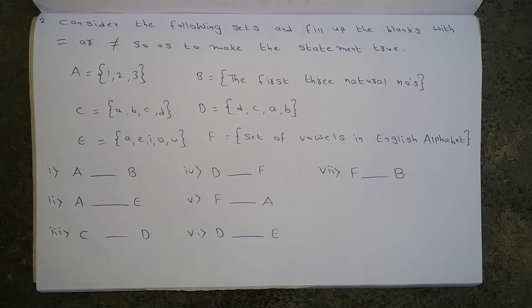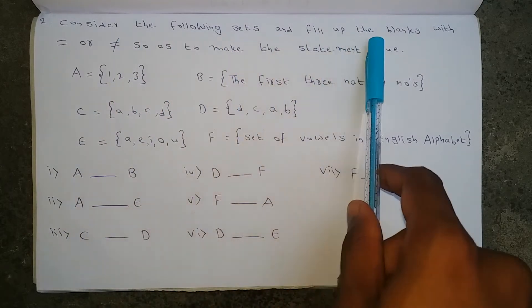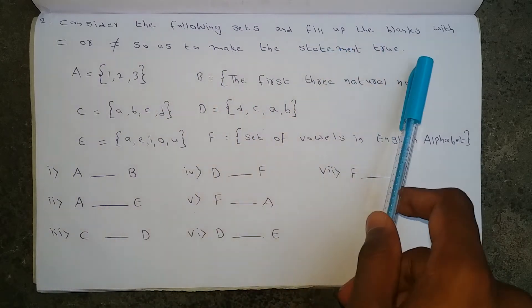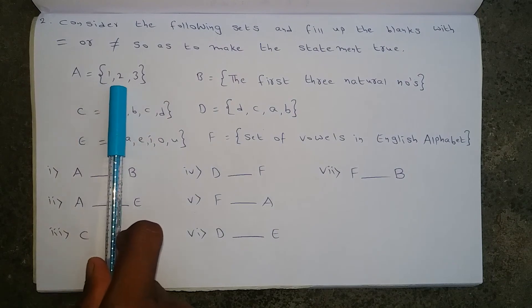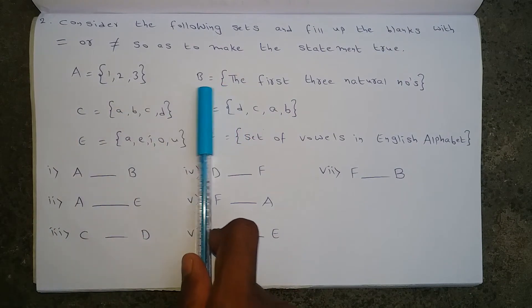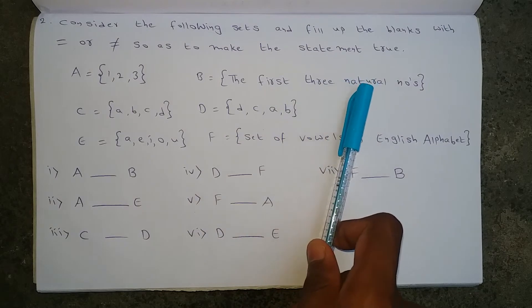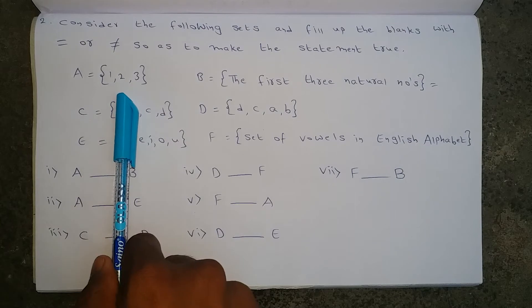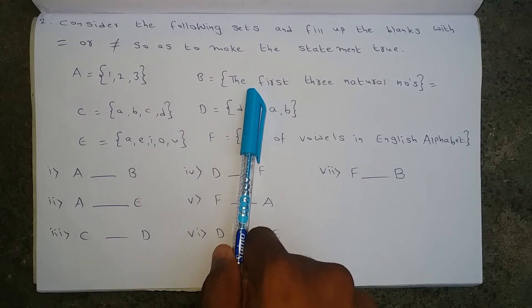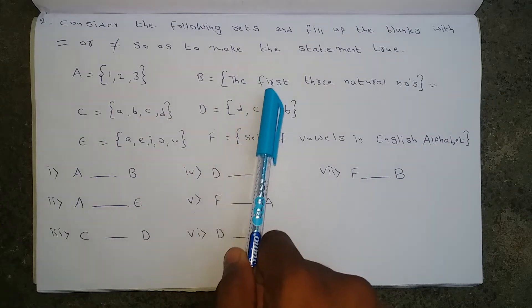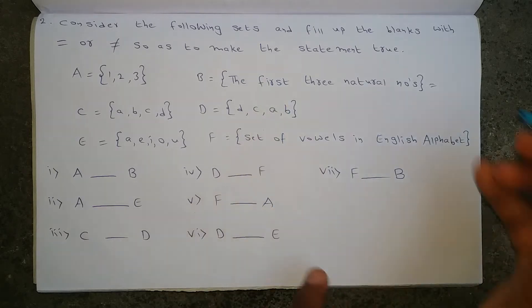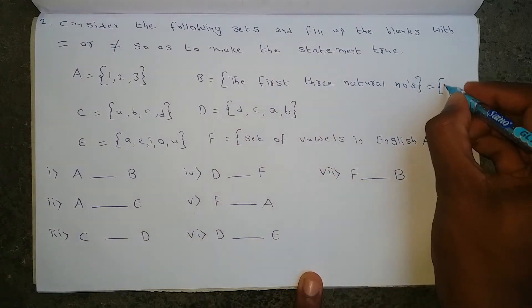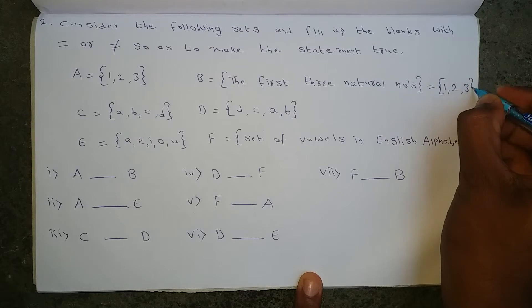Now let us look at the second part: consider the following sets and fill in the blanks with 'equal' or 'not equal' to make the statement true. Set A is {1, 2, 3} and set B is the first three natural numbers. Set A is in roster form. Set B is in set builder form, so we need to change it to roster form. The first three natural numbers are 1, 2, 3.